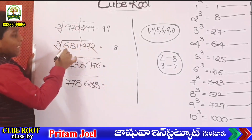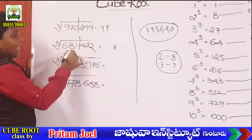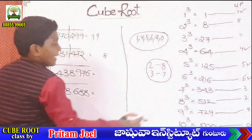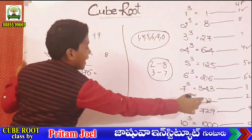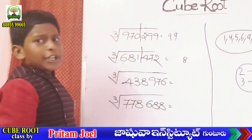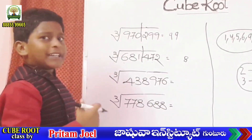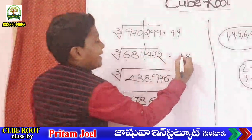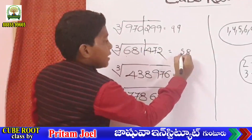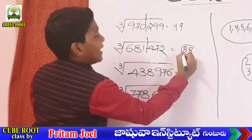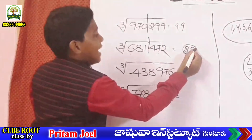Remaining 681 is bigger than 512, which means 8 cube. Cube root cancels, so 8. This answer is 88.